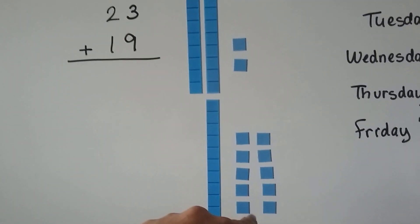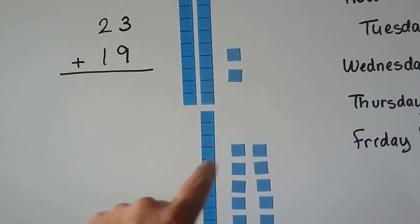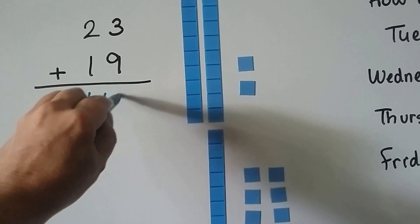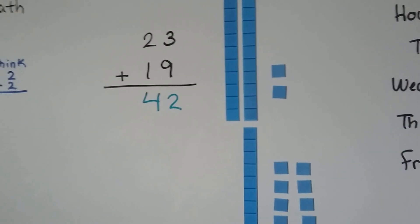We can regroup this and move one of the ones from here to the 9 to make another 10. Now we have a 10 there. We have one, two, three, four tens, and two ones. We have two ones left over. See?